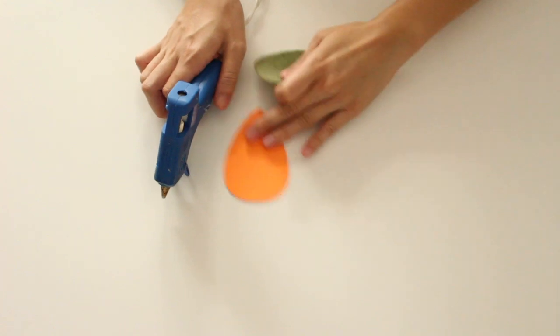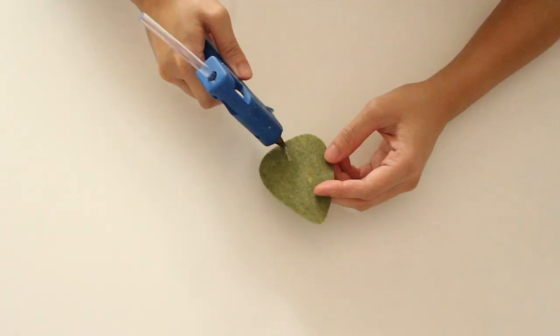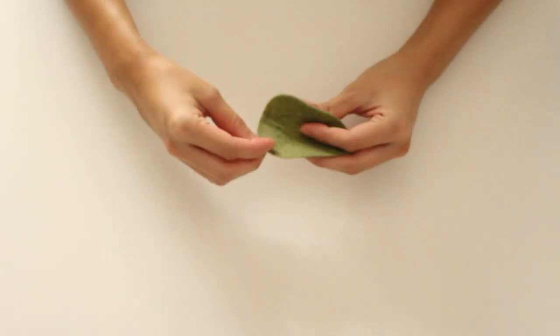Cut out leaves using the leaf template and add a little line of glue toward the bottom center. Then fold your leaf in half.